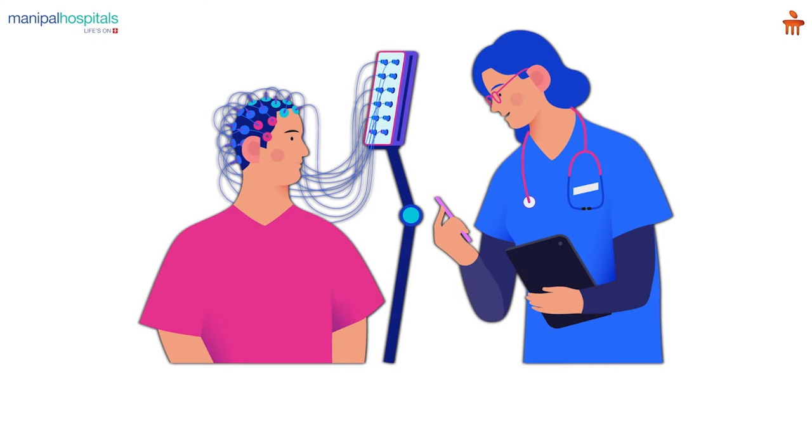We will start them on medication. 75% of them will get controlled with a single medicine, and usually 25 to 30% of them — seizures will not stop with two or three medicines — and then they will be considered as medically refractory epilepsy.